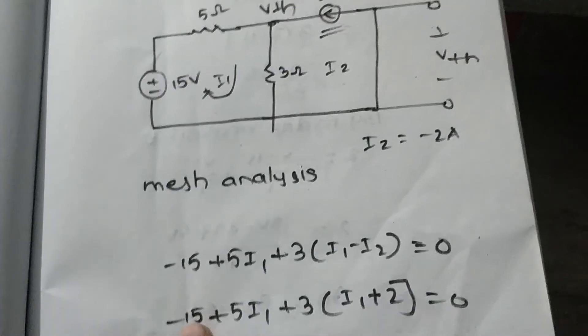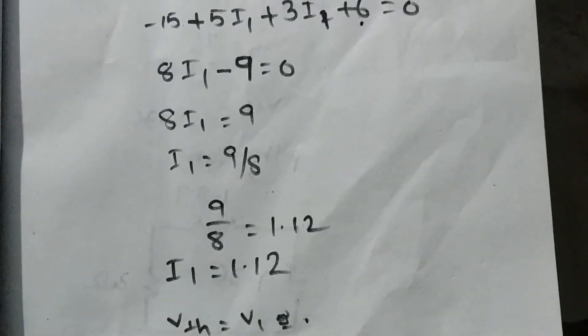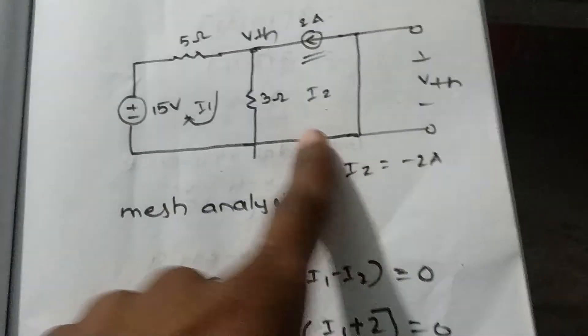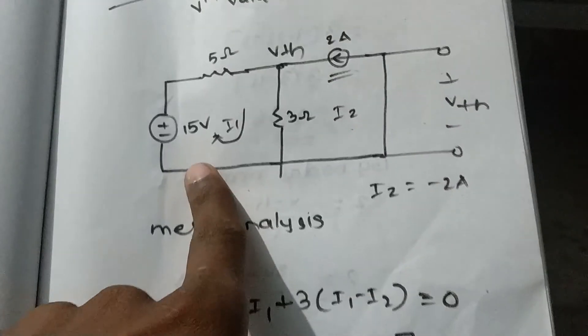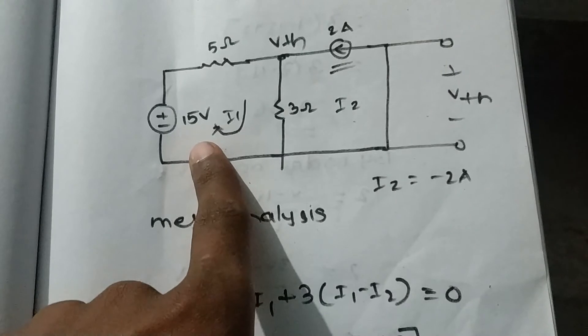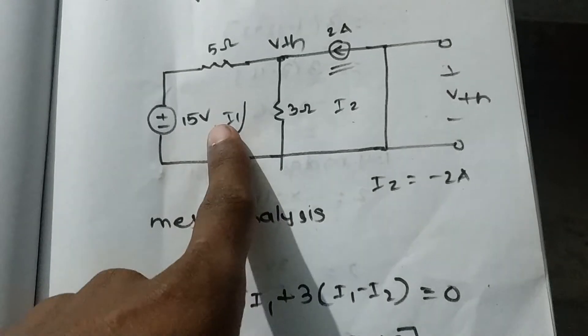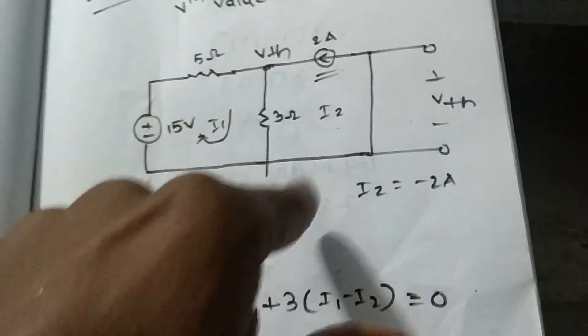We apply mesh analysis. This is loop 1 and this is loop 2. By applying mesh analysis, we get equations for I1 and I2. I2 is already known as minus 2 amperes from the second loop. By applying mesh analysis for loop 1, we want to find the I1 value.